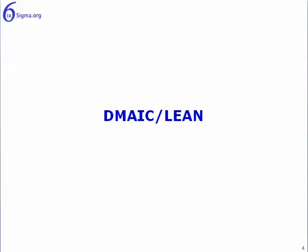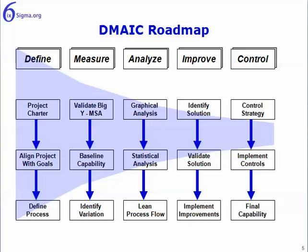The first one we'll look at is DMAIC and Lean combined. Remember there are three circles of competence in the Six Sigma methodology: DMAIC, Lean, and DMADV. The Lean methodology uses the DMAIC framework. So across the top here we have Define, Measure, Analyze, Improve, and Control — these are called phases, making it a five-phase methodology.